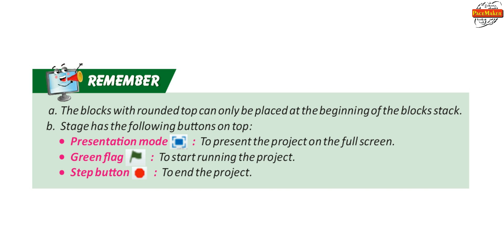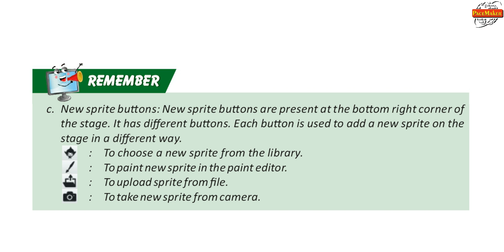The stage has the following buttons on top: Presentation Mode to present the project on full screen, Green Flag to start running the project, and Stop button to end the project. New Sprite buttons are present at the bottom right corner of the stage. There are different buttons: one to choose a new sprite from the library, one to paint a new sprite in the paint editor, one to upload a sprite from file, and a camera button to take a new sprite from the camera.